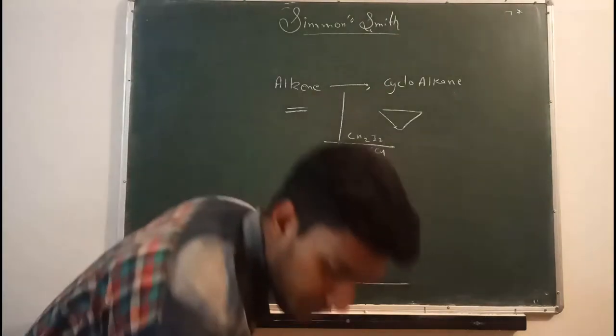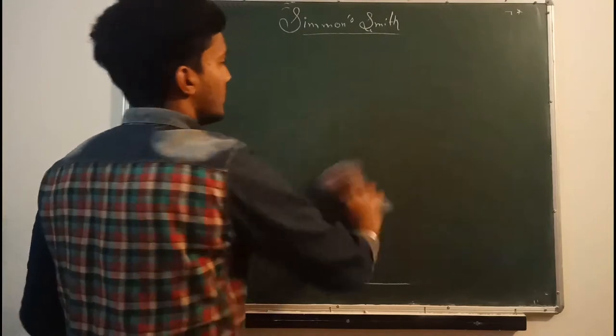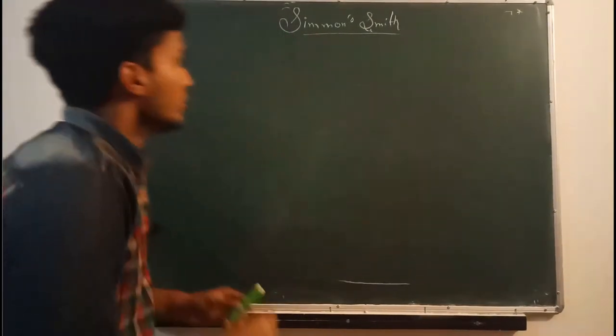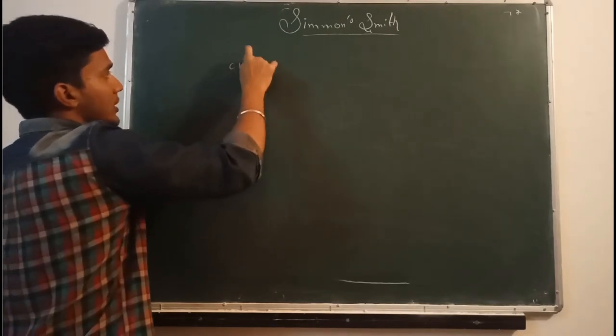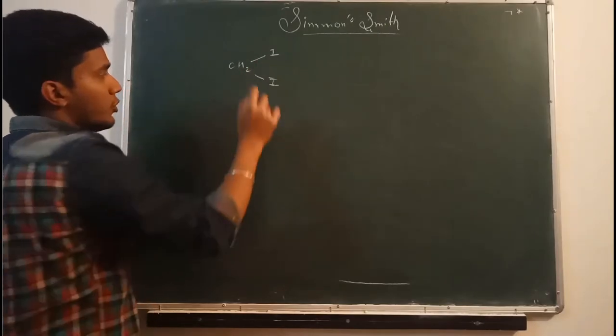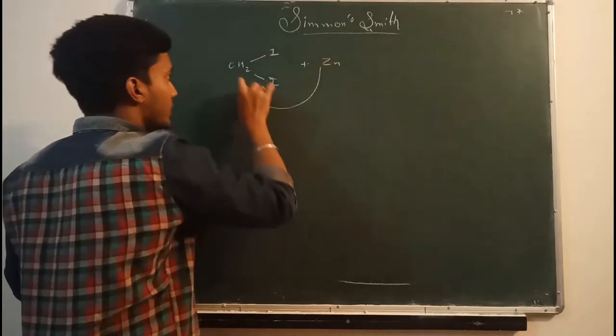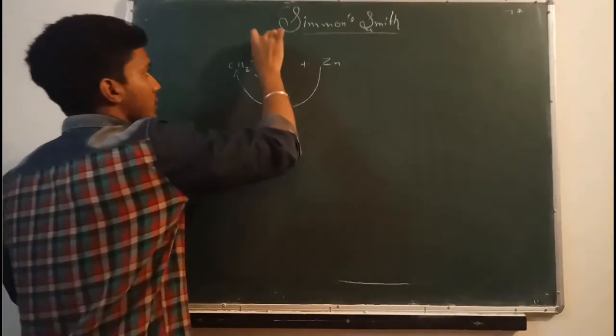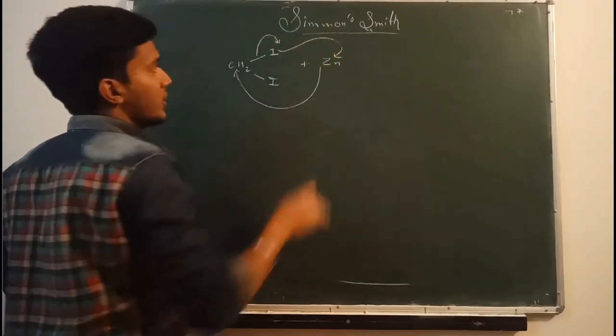Let's do the mechanism of this Simmons-Smith reaction. First we see that we have CH2I2. If we will react this with zinc, then this zinc will attack to the CH2 and this I2 will leave. And this I will migrate to this zinc. And the product will be CH2I-zinc-I.